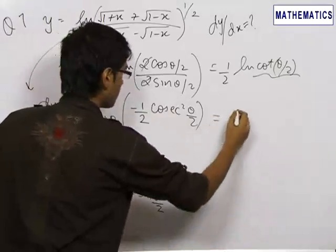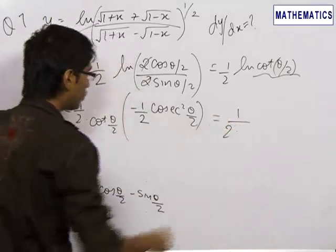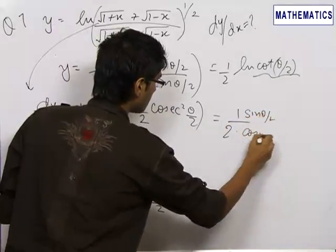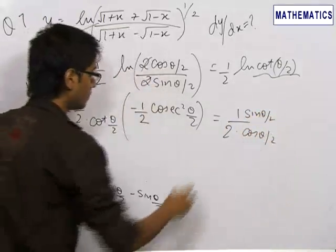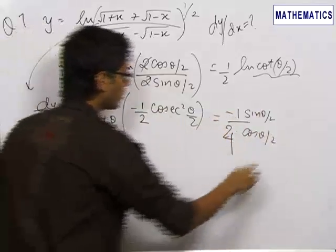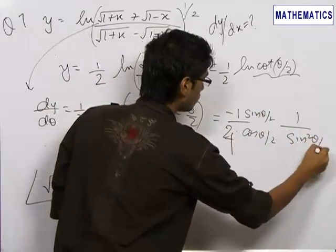Now this is 1/(2 sin(θ/2) cos(θ/2)), this is minus 1/4, and this becomes sin²(θ/2).